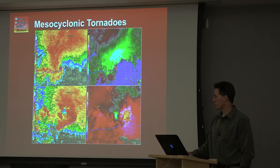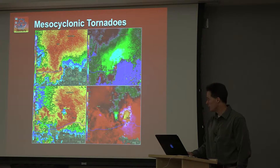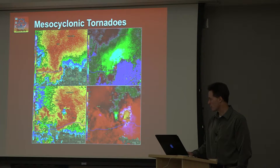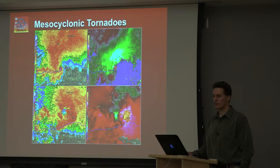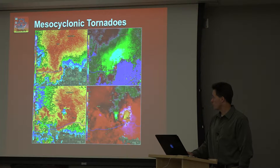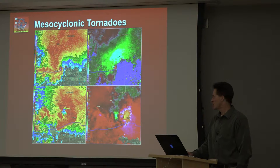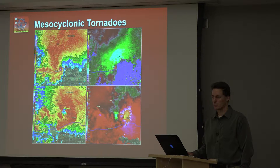These are all characteristic supercell structures. Upper left: classic reflectivity hook, even a small potential debris signature with lofted debris in the tornado circulation. Lower left: a large bounded weak echo region indicative of a deep strong updraft above the storm inflow. Lower right: broad strong rotation — that's the storm mesocyclone, up at 15 to 20,000 feet. Upper right: reflection of the tornado circulation itself just northeast of Valonia, coincident with that high-reflectivity donut signature.